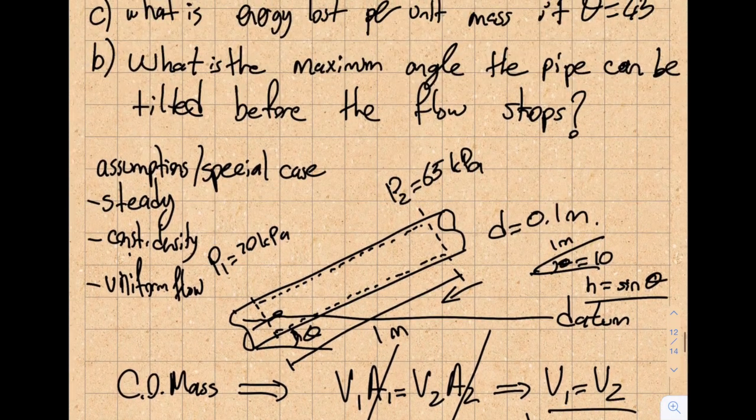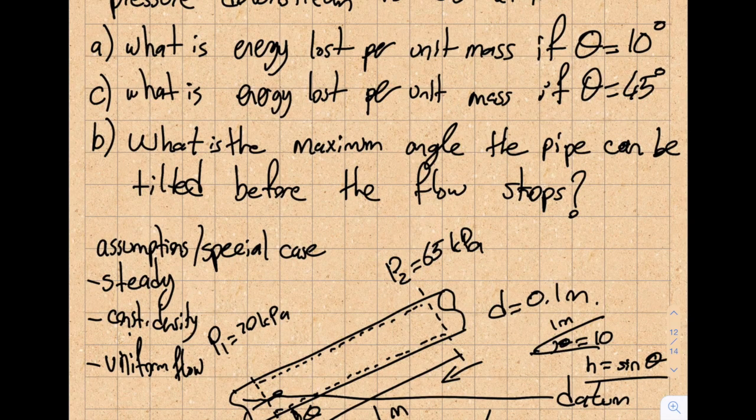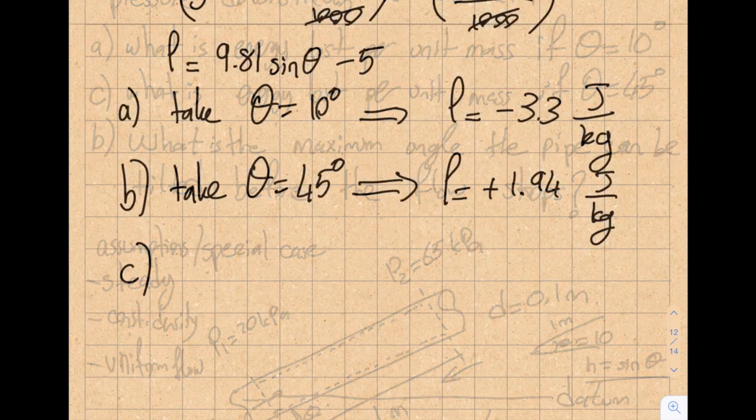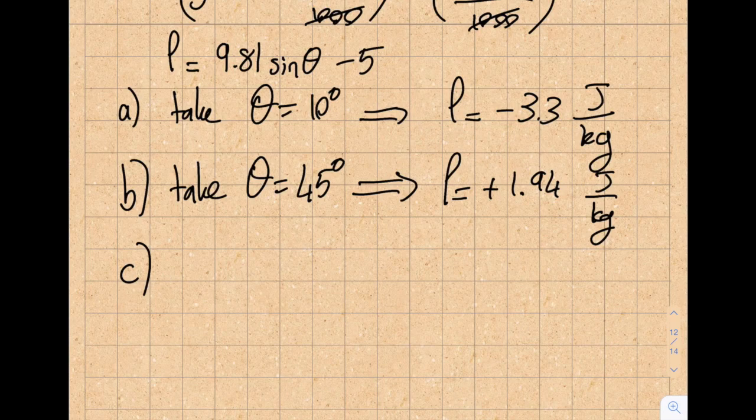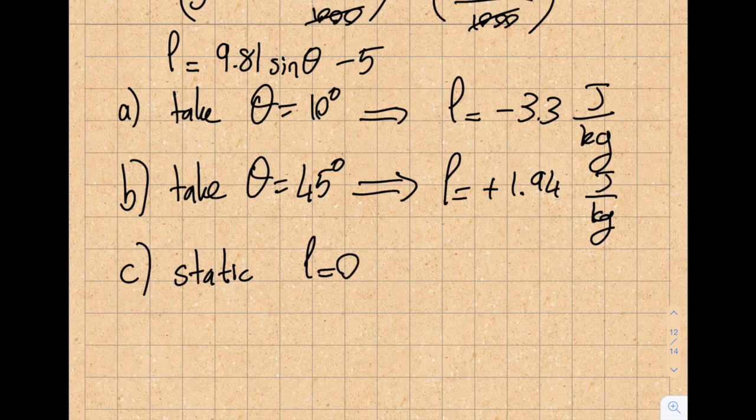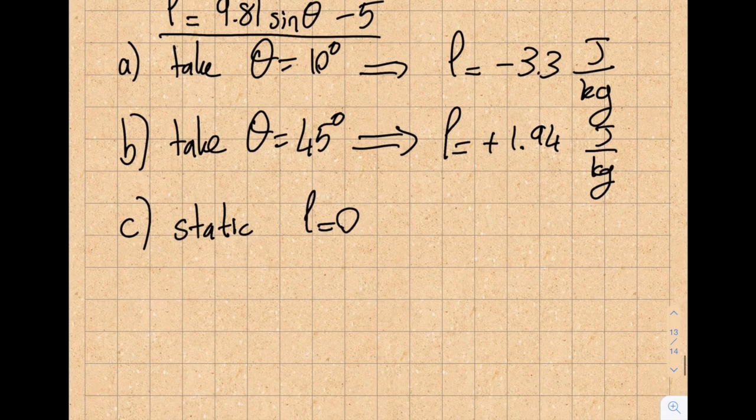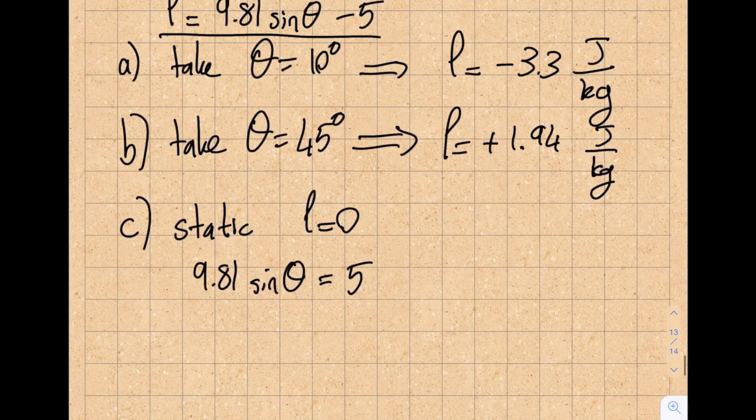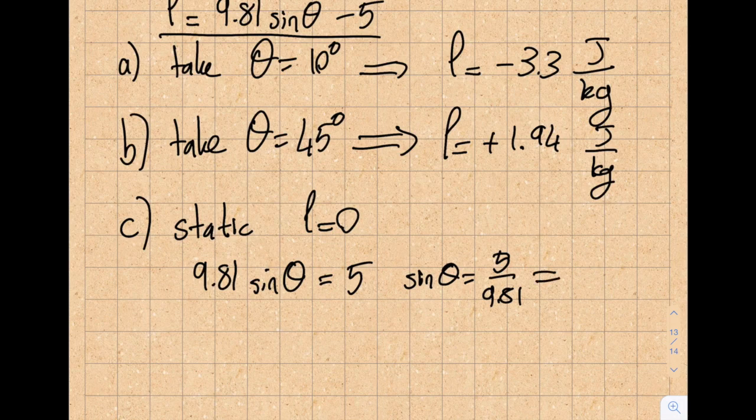And in part C of the question, you will find out that my theta critical, where my flow stops, will be right between 10 and 45 degrees. You think about it. This is going to be a static case. Not dynamic. So if this is static, there will be no loss. And I have the equation up here, right?